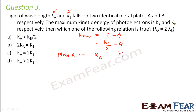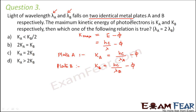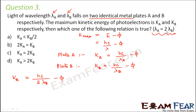For plate A: Ka = hc/λa − φ. For plate B: Kb = hc/λb − φ. The work function φ is the same for both plates because they are identical metal plates — work function depends on the nature of the material. Since λa = 2λb (given), Ka = hc/(2λb) − φ.